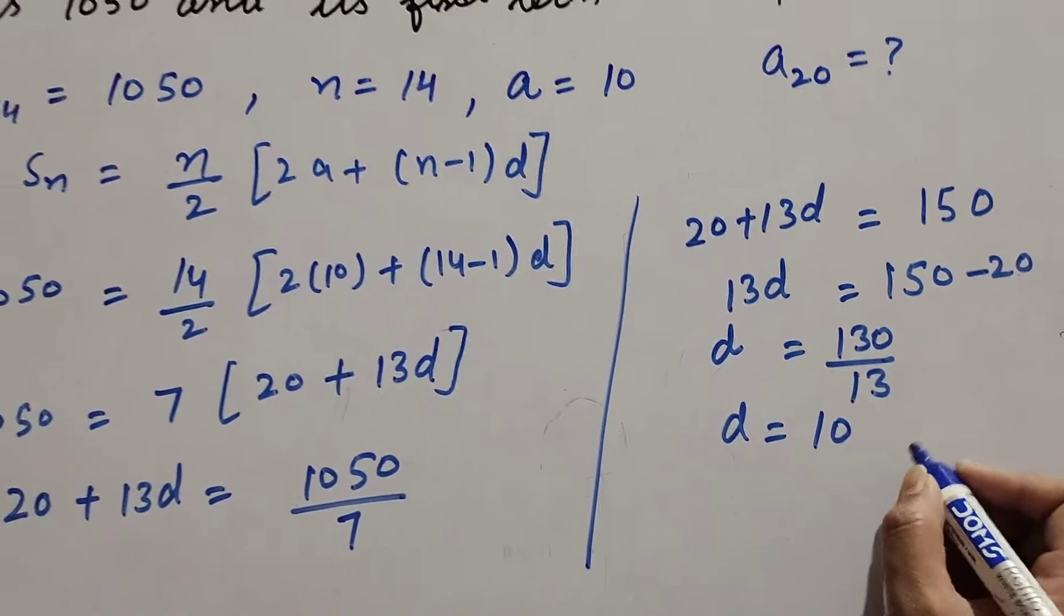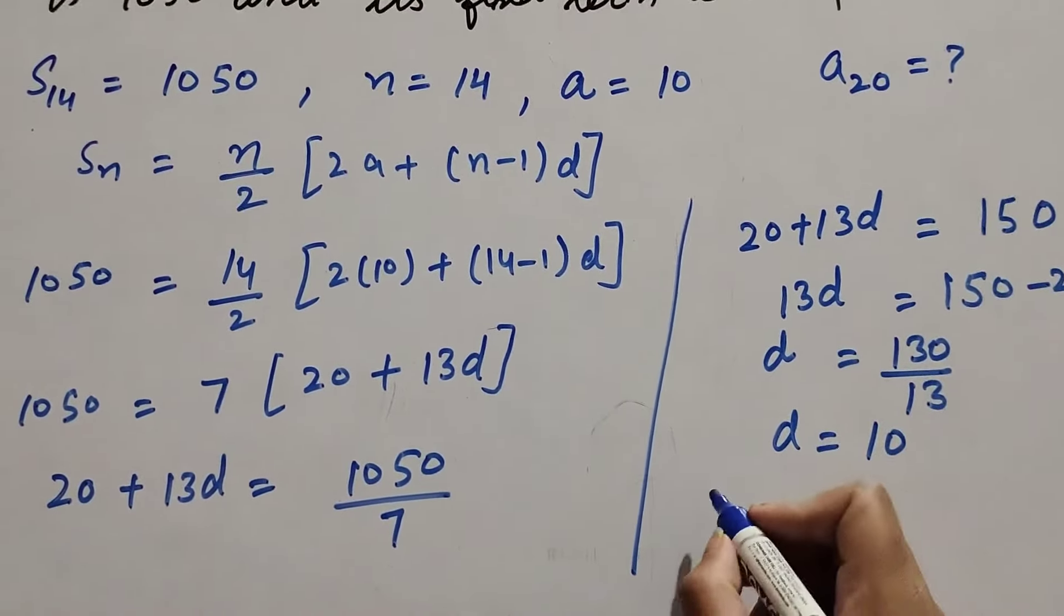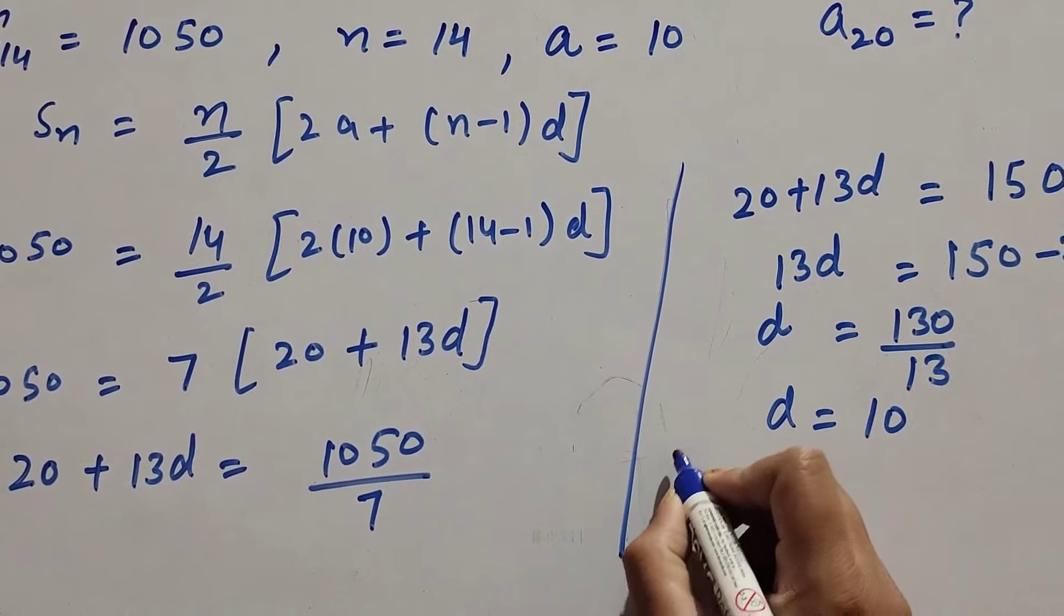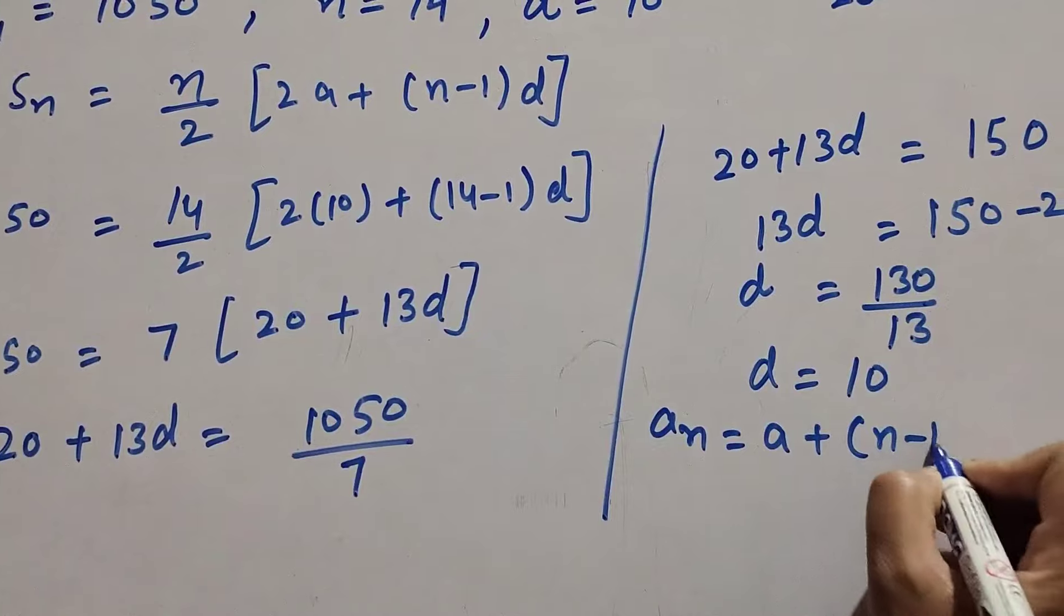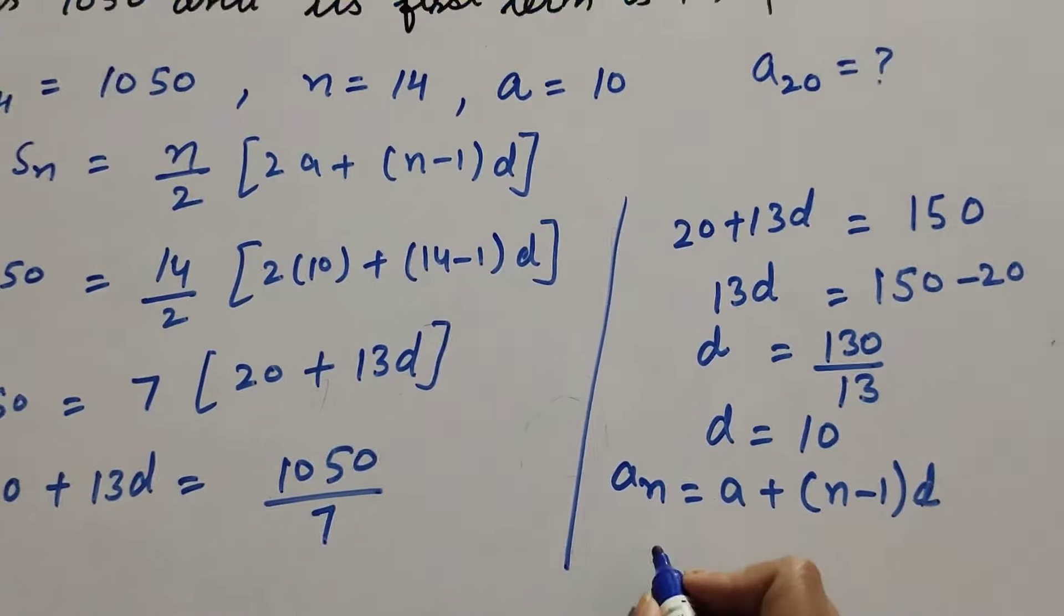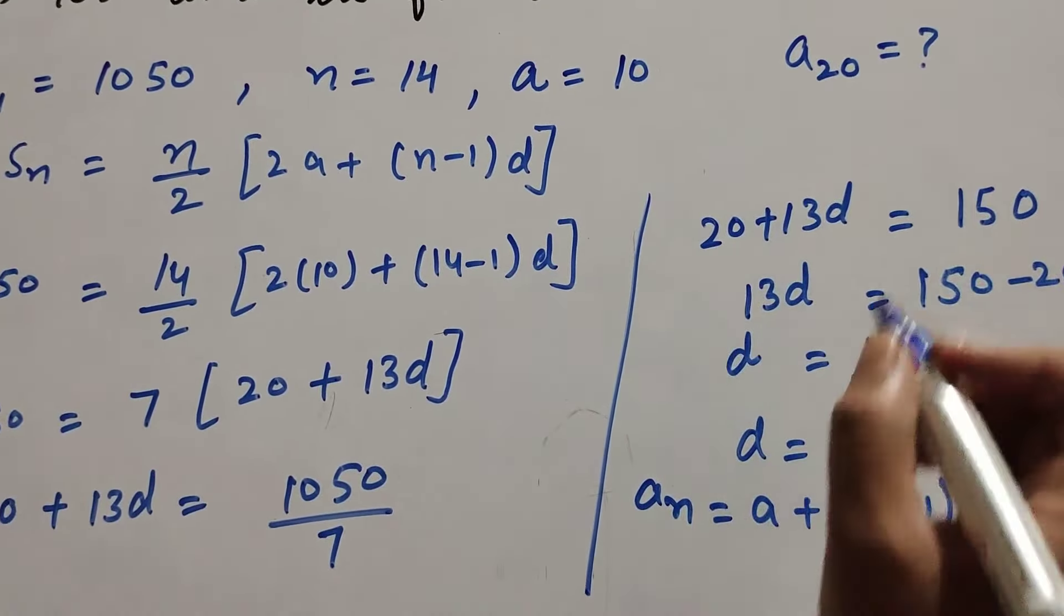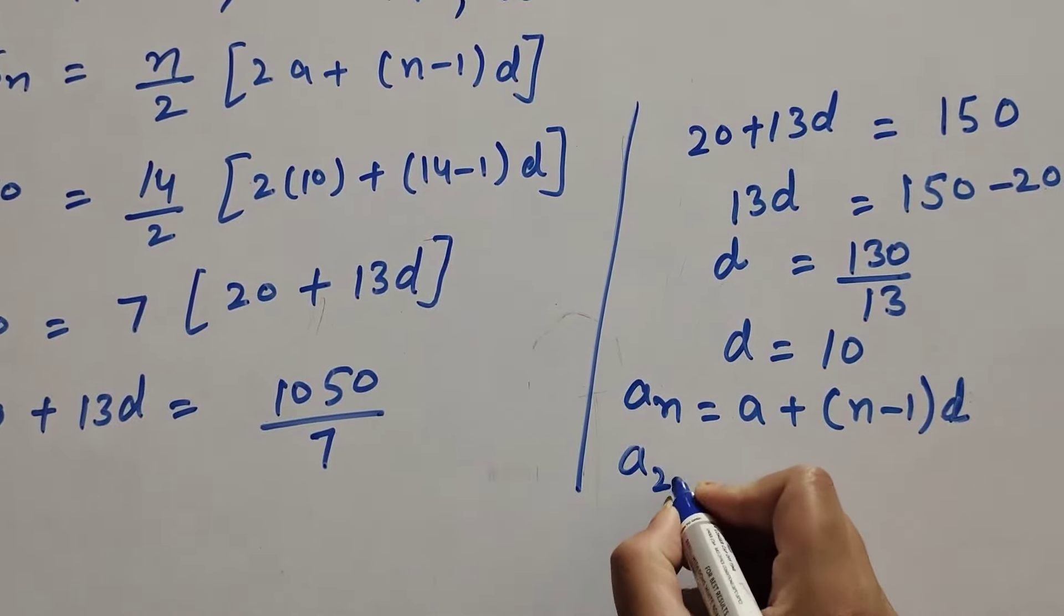We find 20th term of the AP. We know the formula to find nth term: an equals a plus (n-1)d. So we find the 20th term, a_20 equals a (first term is 10) plus (n-1), n equals 20 minus 1, common difference d that we found is 10.